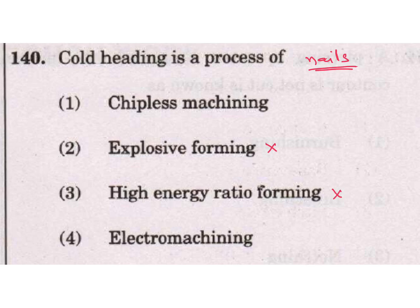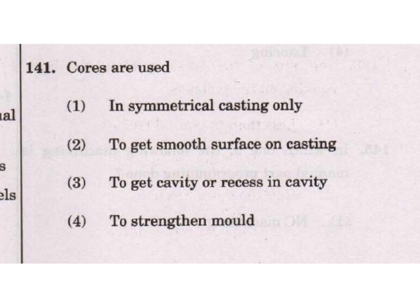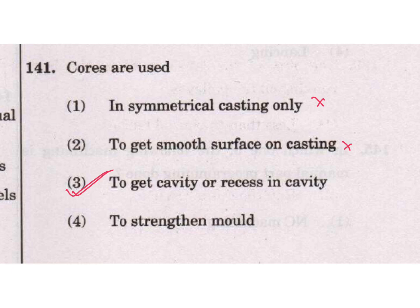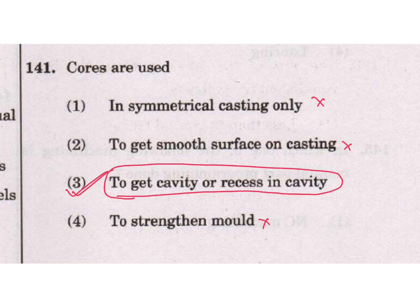Cores are used in casting to get a cavity or recess in the mold cavity. For supporting the core, chaplets are used. The official answer given was to strengthen the mold, but cores are actually used for making a hollow cavity or recess inside the casting product.